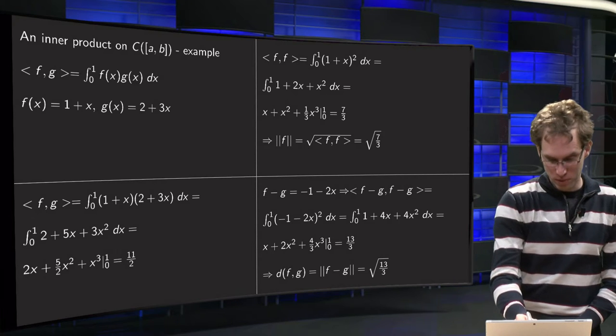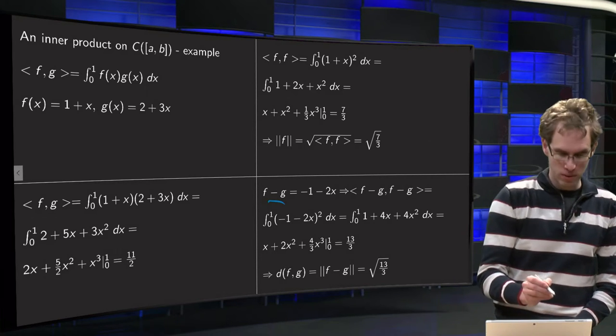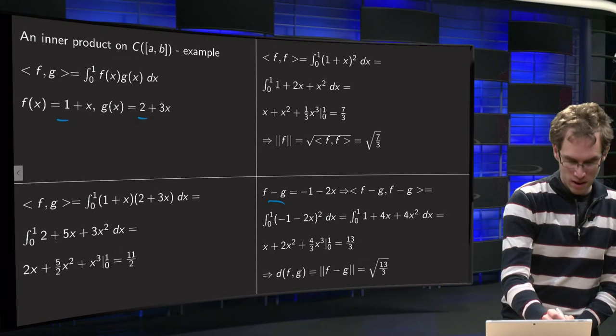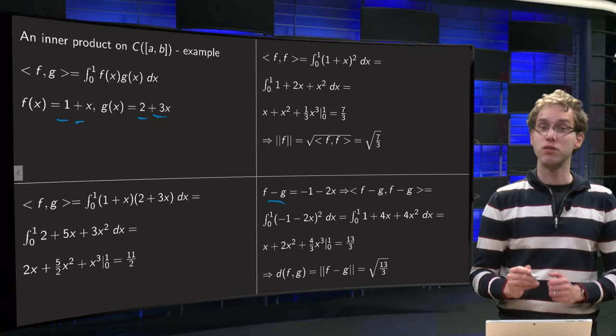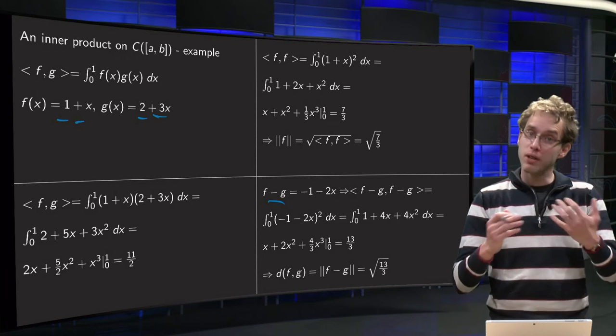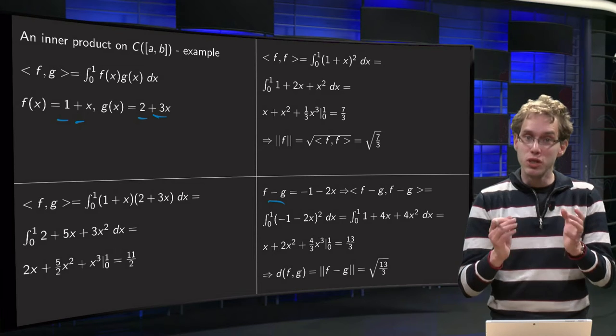So first we compute f minus g. So f minus g equals 1 minus 2 equals minus 1, x minus 3x equals minus 2x. So there we have f minus g. And then we compute the length of this new vector.